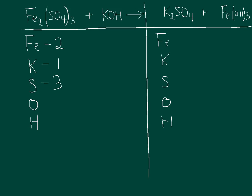Oxygen works the same way — inside the parentheses I have four oxygens, and I multiply that by three: four times three is 12. But I also have one more oxygen in the hydroxide, so I need to add that, making it 13 oxygens on the reactant side. Lastly, I have just one hydrogen. That's my reactant side done.